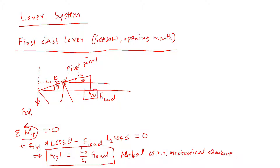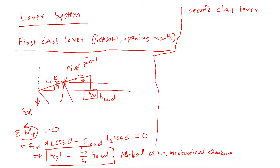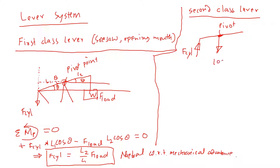We don't get mechanical advantage from the first-class lever. Now let's look at the second-class lever. In the second-class lever, the cylinder is still present but applies a force upward, the pivot point is at one end, and the load is positioned between the cylinder and the pivot.